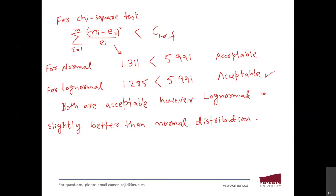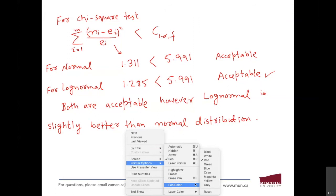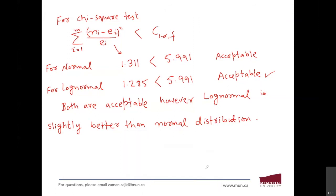I will stop here and take your questions. A student is asking: why did you divide the data into 5 intervals — can it be divided into other numbers? Yes, absolutely you can. The key constraint is that when you add up all the observed frequencies across your chosen intervals, they must equal your total number of observations.